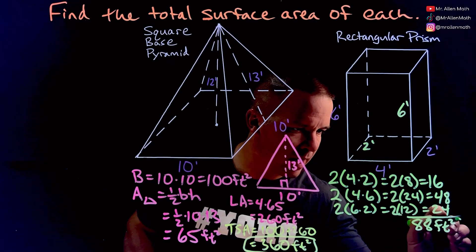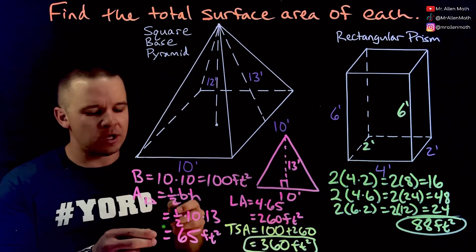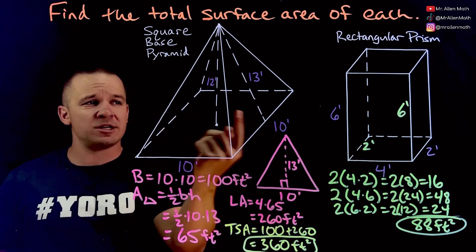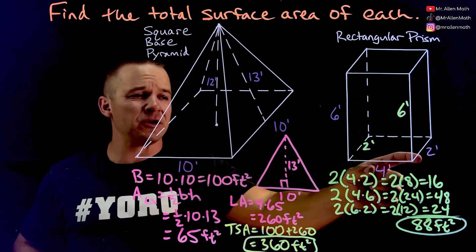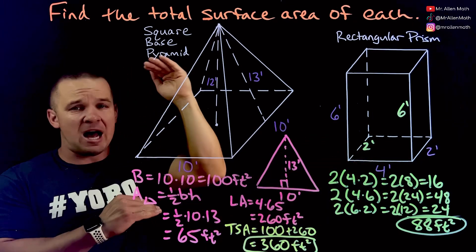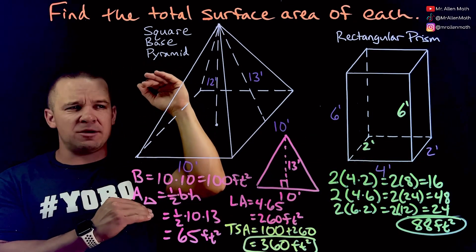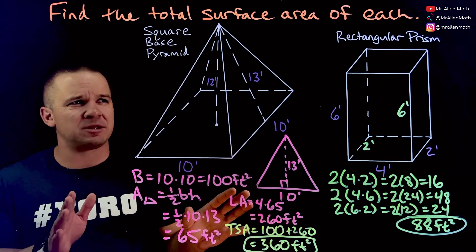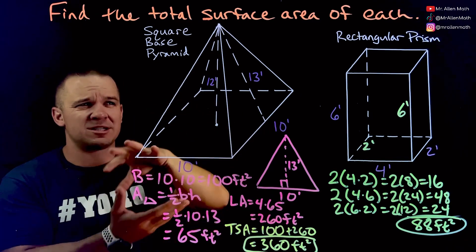88 feet squared, that is my total surface area of this rectangular prism. Again, people talk about lateral area, they talk about the ones that wrap around. So if like the two foot by four foot was our base and top, then the six by twos and the six by fours would be like our lateral area. I don't really get into specifics with that when it comes to rectangular prisms because it's kind of ambiguous as to which one's the base.